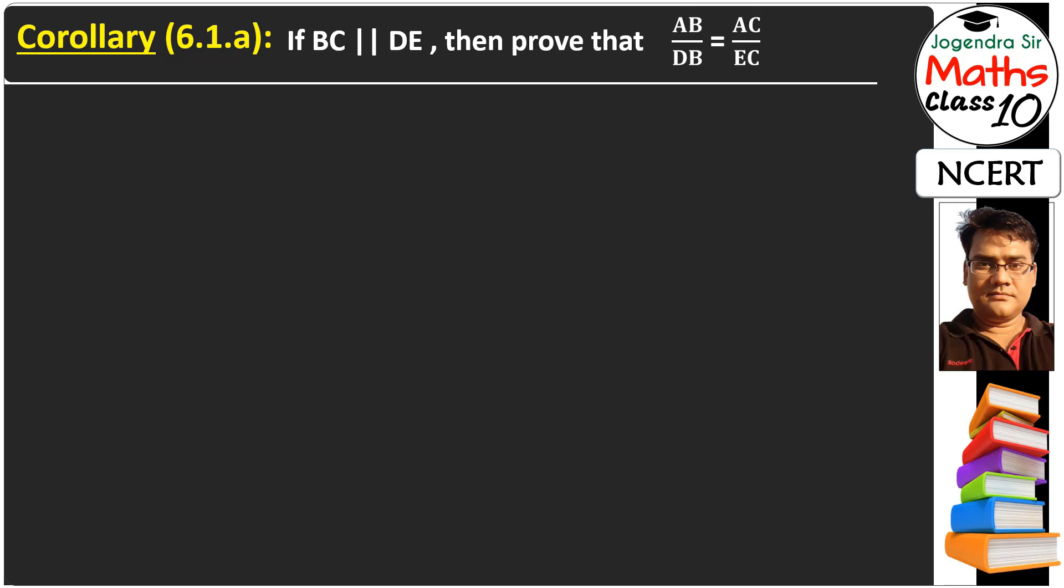So we have two corollaries. First corollary is if these two lines are parallel, baseline and middle line, then prove that full side AB upon DB equals full side AC upon EC. So what we have?